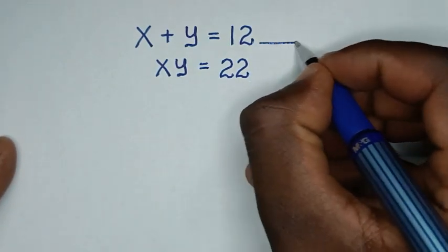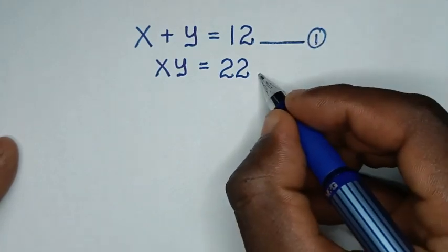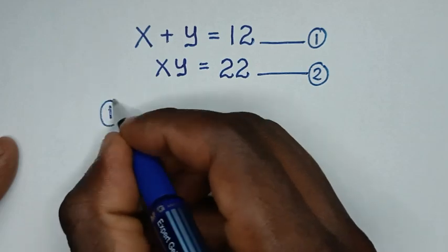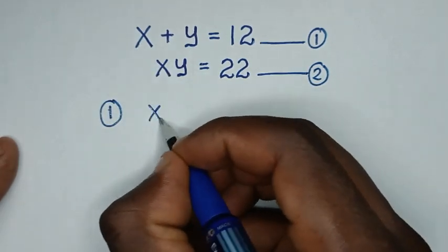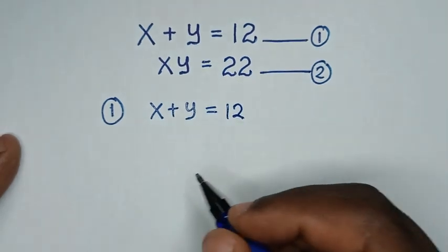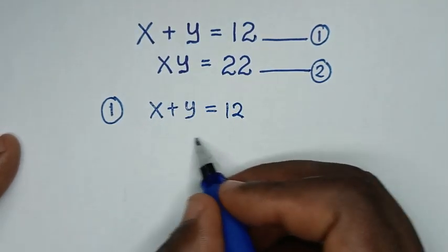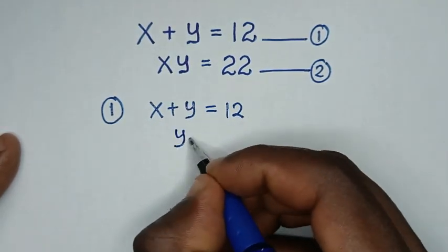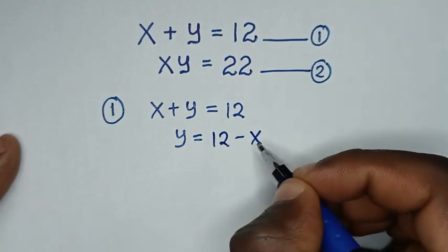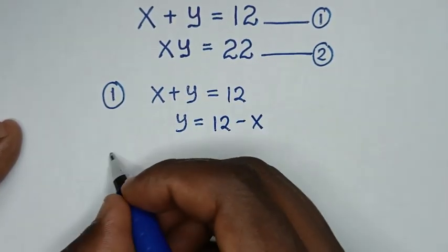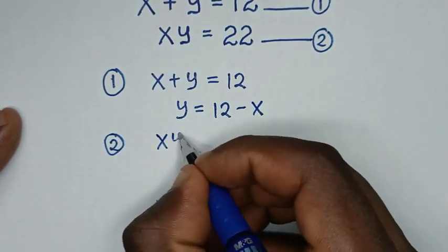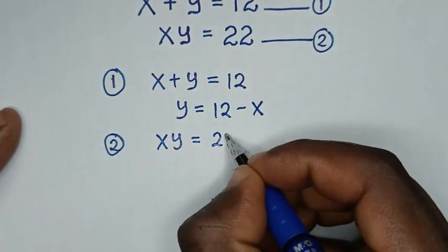First, we start by letting this as equation 1 and this as equation 2. Now, in the first step, from equation 1, which is x plus y is equal to 12, we will make y the subject.